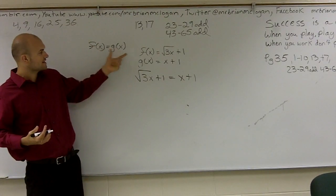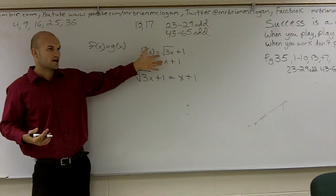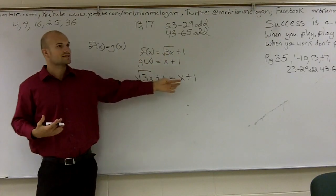So that's pretty much all we're doing. We say f of x equals g of x. We know what f of x and g of x are that's given to us, so we set them equal to each other.